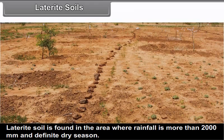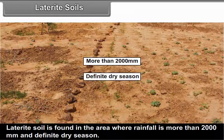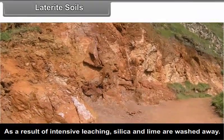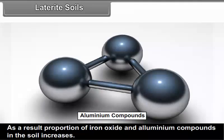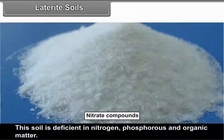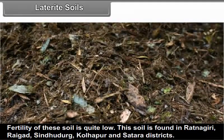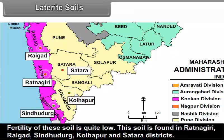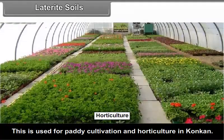Laterite soils: Laterite soil is found in areas where rainfall is more than 2000 mm with a definite dry season. As a result of intensive leaching, silica and lime are washed away, and the proportion of iron oxide and aluminium compounds in the soil increases. This soil is deficient in nitrogen, phosphorus and organic matter, and its fertility is quite low. This soil is found in Ratnagiri, Raygad, Sindhudurg, Kolhapur and Satara districts. It is used for paddy cultivation and horticulture in Konkan.